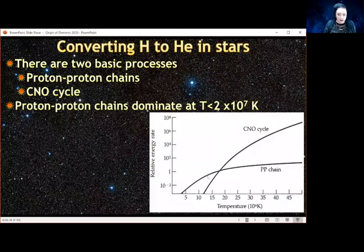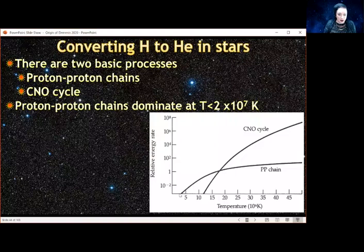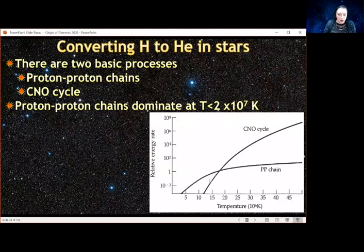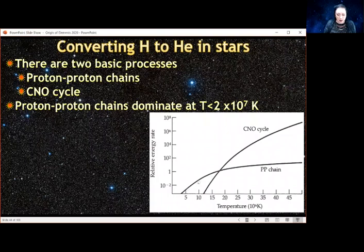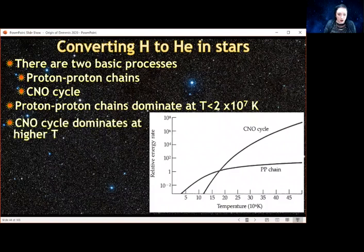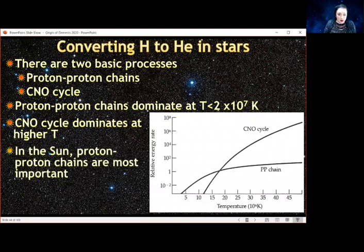You're going to have different processes depending on the type of star that you're looking at. For stars like the sun, it's actually going to be doing mostly proton-proton chains, but it's going to have some CNO cycle process going on at the same time. As you go to much more massive stars that have much higher temperatures in the core, the proton-proton chain is less important and the CNO cycle is more important. The CNO cycle is going to dominate when you have higher temperatures.